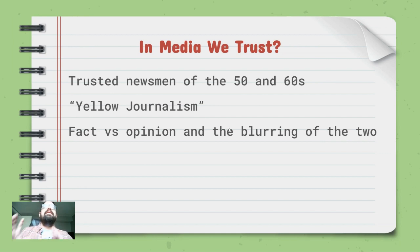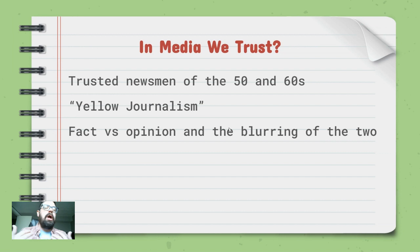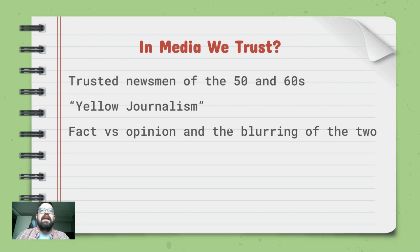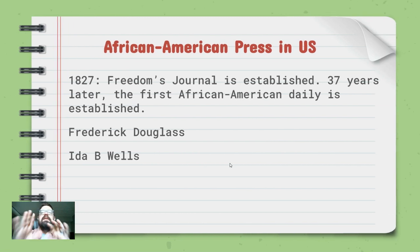Yellow journalism, the thing I mentioned with William Randolph Hearst, started emerging in the 50s and 60s — journalism used not necessarily in the most factual way, targeting people the publisher didn't like or rival newspapers. It's become a blanket term for journalism that isn't fully factual. Even today on CNN or ESPN, straight facts seem boring — we mix fact with opinion, adding commentary after every news item. In 1827 Freedom's Journal was established, and 37 years later the first African-American daily newspaper appeared. Frederick Douglass and Ida B. Wells were crucial figures in the free press.